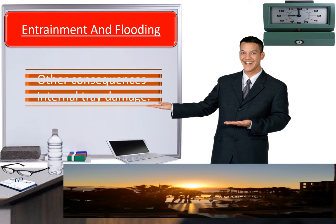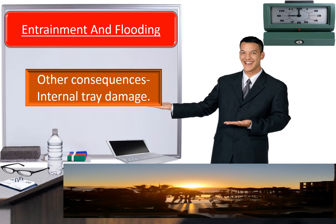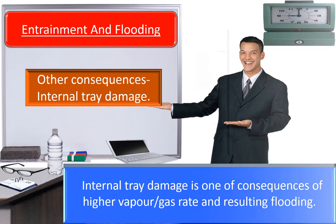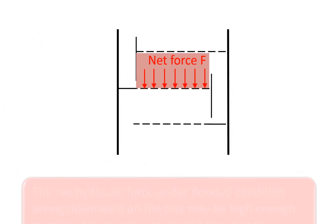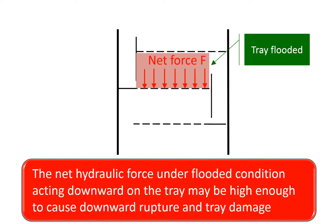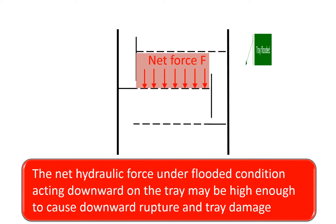Other consequences of jet flooding: internal tray damage. Internal tray damage is one of the consequences of higher vapor/gas rate and resulting flooding. The net hydraulic force acting downward on the tray under flooded conditions may be high enough to cause downward rupture and tray damage.